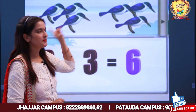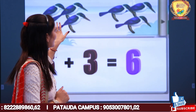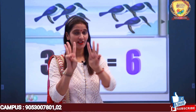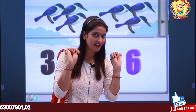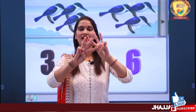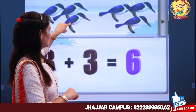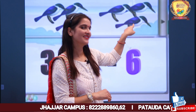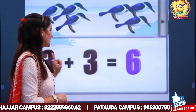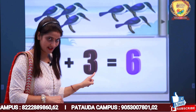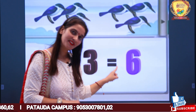We can see 3 sparrows here. Then 3 more sparrows came. How many sparrows are there now? 1, 2, 3, 4, 5, 6. Let's check — 1, 2, 3, 4, 5, 6. So 3 plus 3 is equal to 6.